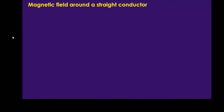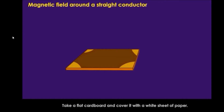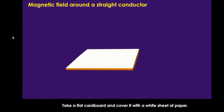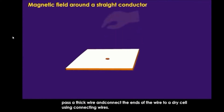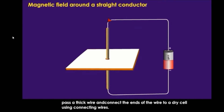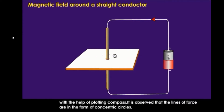Magnetic field around a straight conductor can be understood by the following activity. Take a flat cardboard and cover it with a white sheet of paper. In the middle of the cardboard, make a hole and through it pass a thick wire, and connect the ends of the wire to a dry cell using connecting wires. Plot magnetic lines of force around the conductor with the help of a plotting compass.